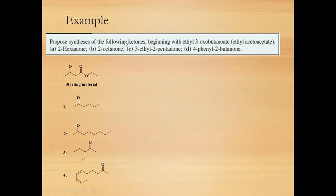Some examples of ketones to be synthesized using acetoacetic ester synthesis are: 2-hexanone, 2-octanone, 3-ethyl-2-pentanone, and 4-phenyl-2-butanone. The starting material in all cases is ethyl acetoacetate, also known as ethyl 3-oxobutanoate.